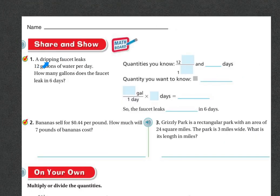Share and show. A dripping faucet leaks 12 gallons of water per day. How many gallons does the faucet leak in six days? Quantities we know: the 12 is referring to gallons. Looking back at the problem, the other one is going to be per day. So this bottom is going to be per one day. So 12 gallons for one day. How many days are we trying to get to? We're trying to get to six days.